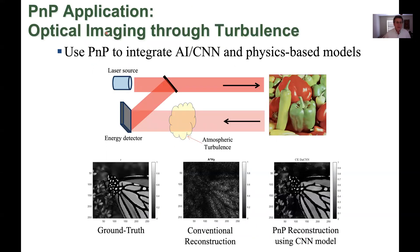This is an application in imaging through turbulence, which is of wide interest. You use a laser to illuminate a target, and then the image comes back blurry and noisy. But by using this plug and play framework, you can integrate CNNs to model the image and get a much better reconstruction than you would using traditional methods.